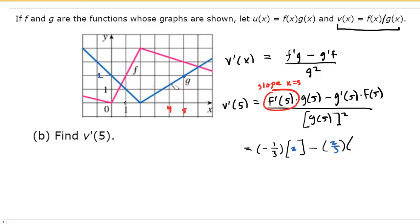f of 5, we return to the f function, which was right here. Slide over to get the y coordinate, which was 3. So we can plug that in. And then we'll divide this by g of 5 squared. Remember, we already found g of 5 to equal 2. So then we would just have 2 squared in the denominator.